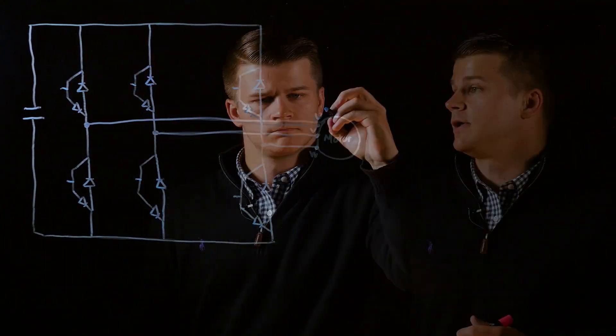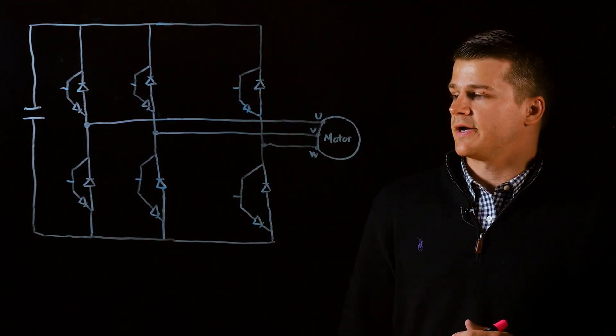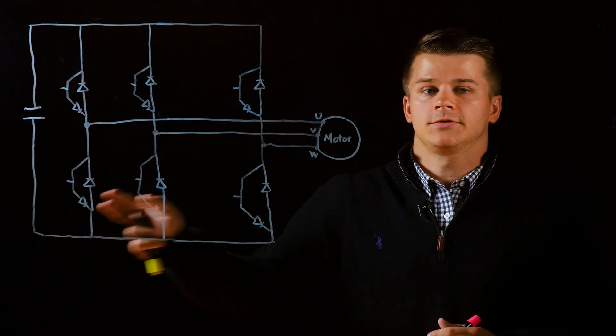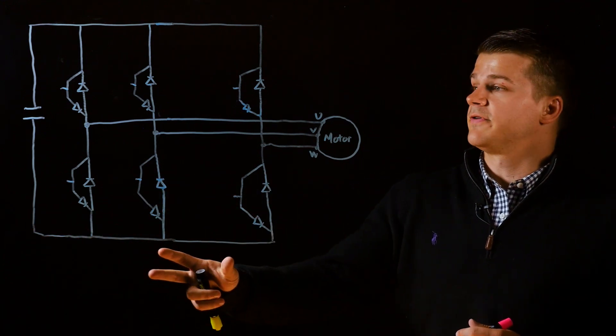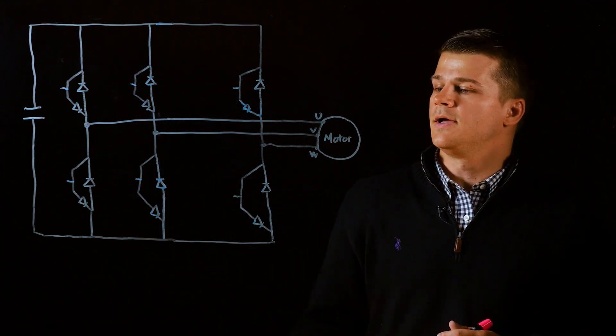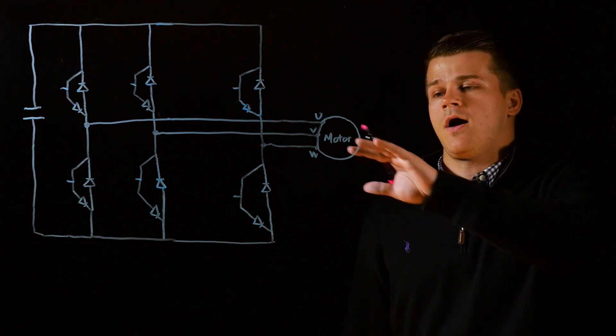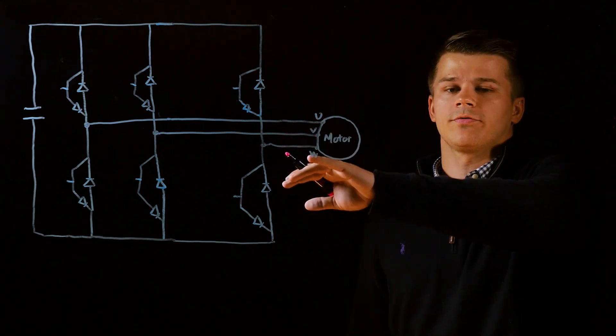So pulse width modulation uses IGBTs that are switching on and off up to 16,000 times per second to convert your DC bus voltage to an AC output at the motor. A typical configuration is shown here with six IGBTs, three on the top and three on the bottom. Depending on which are open affects which phases you go through and in what direction.